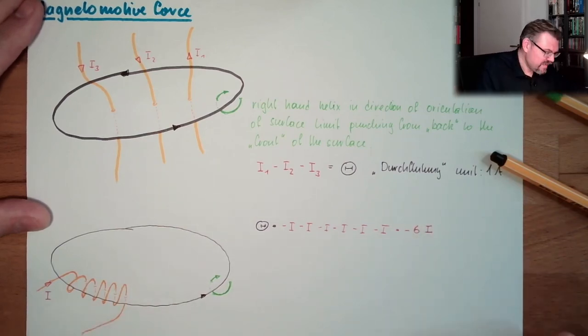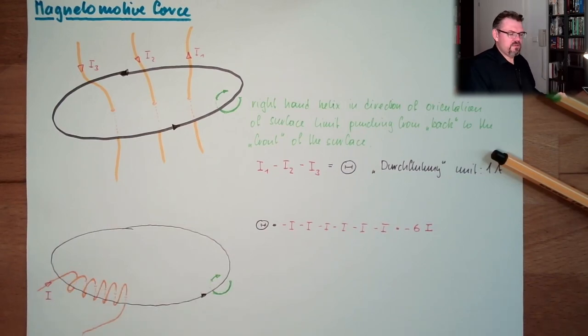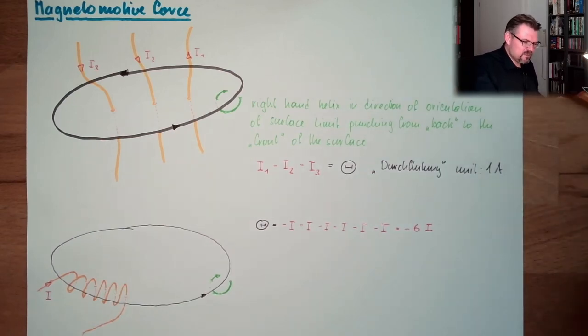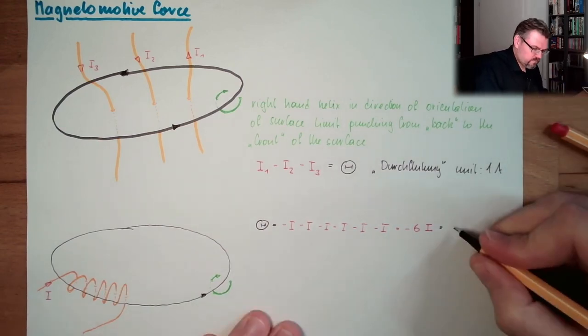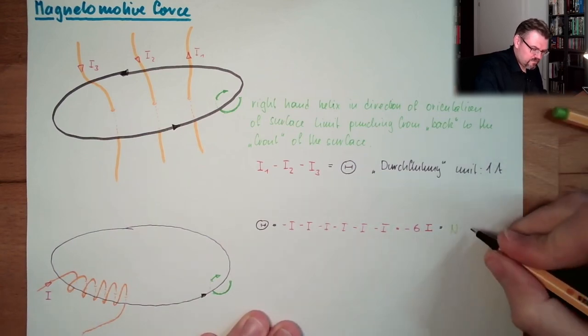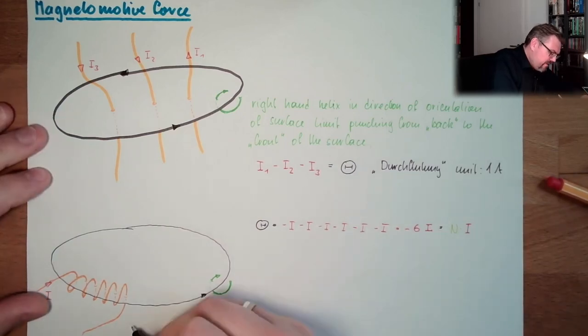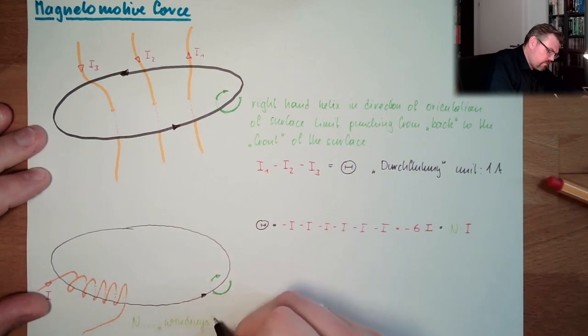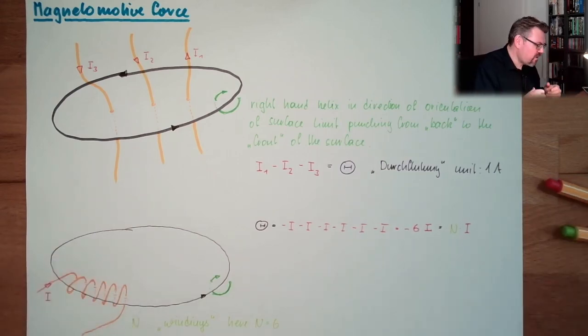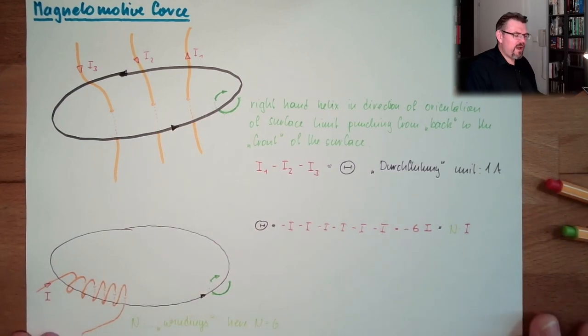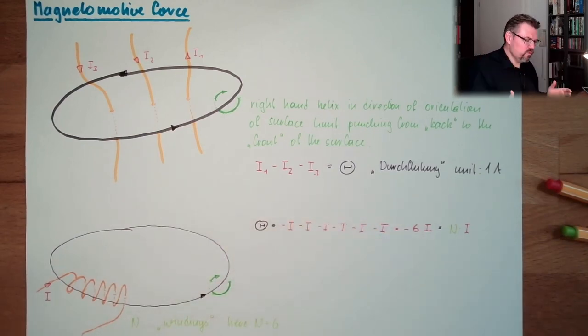Six times the same current is passing through the surface. So actually, we could also write this equals n times I. And n are the so-called windings. Here n equals six. There are six windings of this wire.